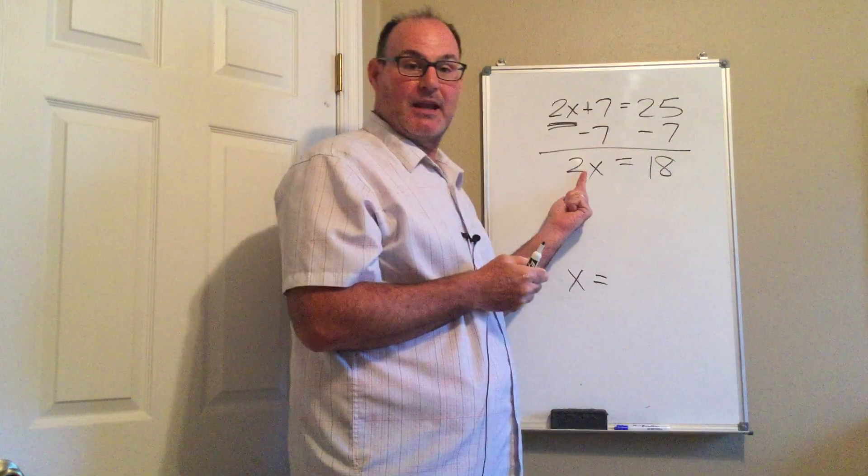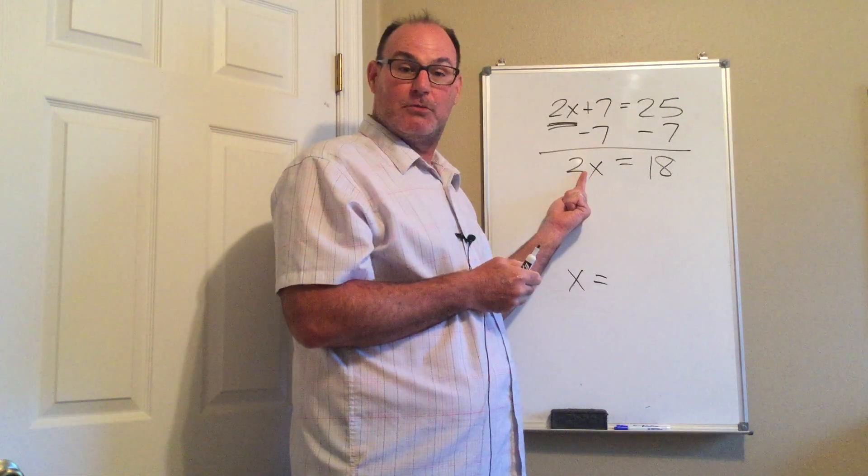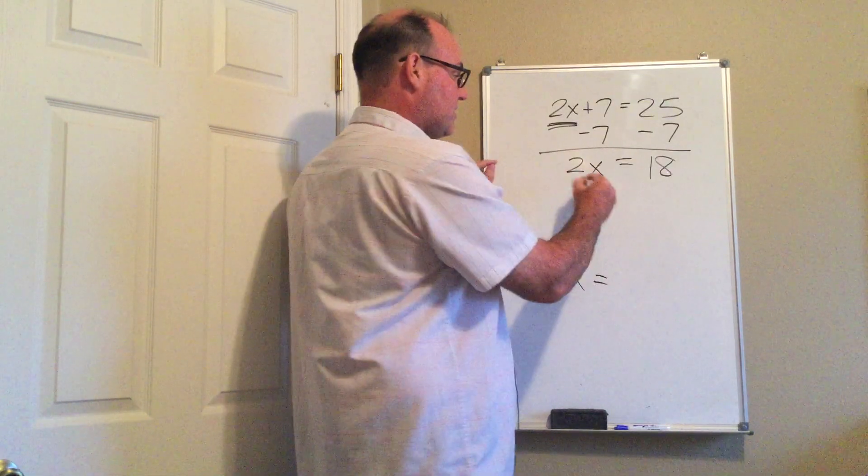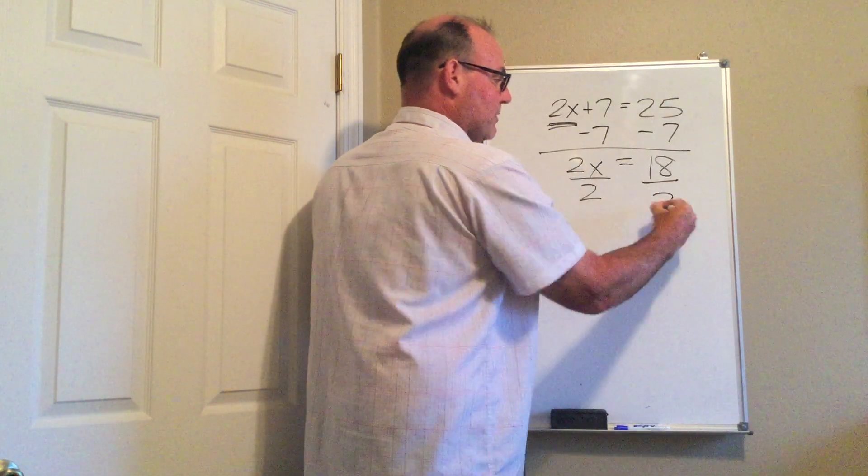When there is no sign between an x and a number, we assume it's multiplication. So the reverse process of multiplication is to divide. So I will divide both sides by 2.